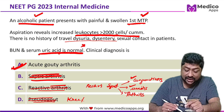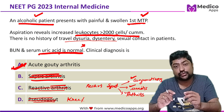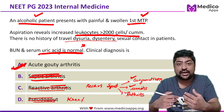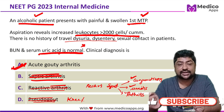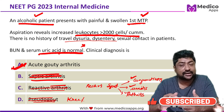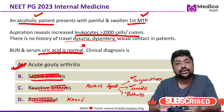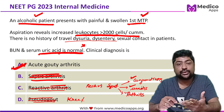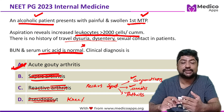The correct answer is acute gouty arthritis. If you like this video, please subscribe to the Medical Apps community so you get notified whenever such MCQ-based videos are uploaded.